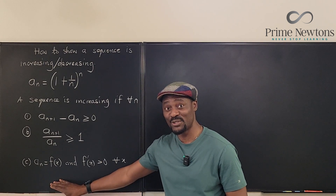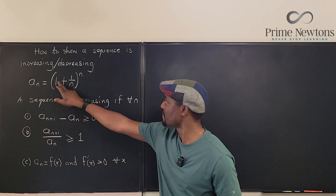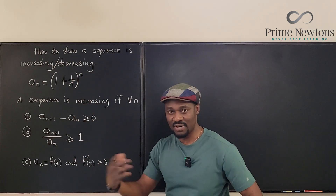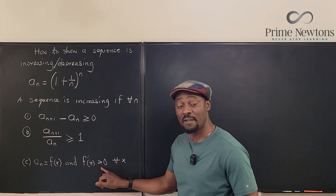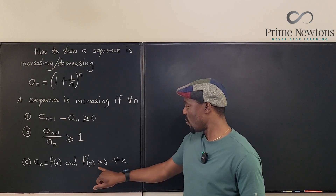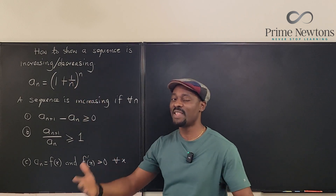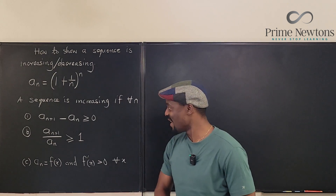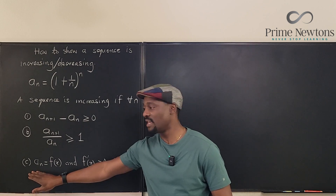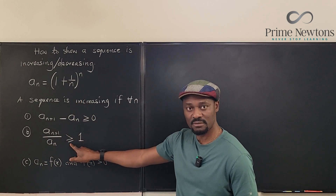The third method — the one most calculus students use — is to take the derivative. You convert the sequence into a function, such as (1 + 1/x)^x, differentiate, and if the derivative is always greater than zero for any x, the function is always increasing. But if calculus is not allowed in your course, you use one of the other methods. Here I'll use the ratio method with Bernoulli's inequality. This is a_n and this is a_{n+1}.